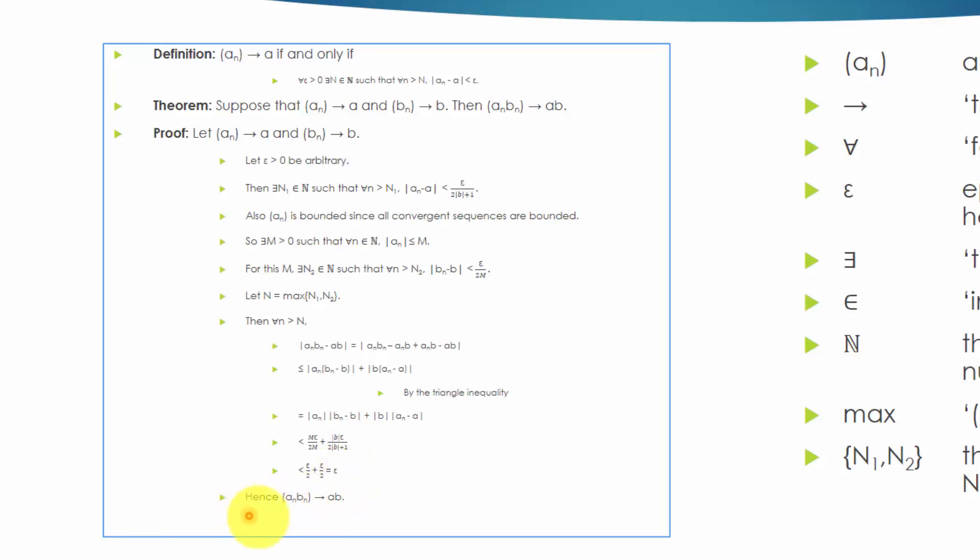Hence, the sequence A-N times B-N converges to A times B.